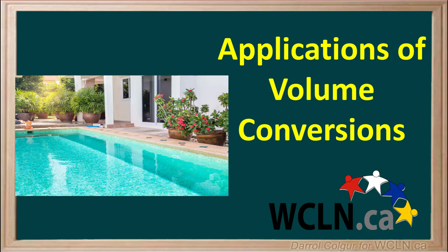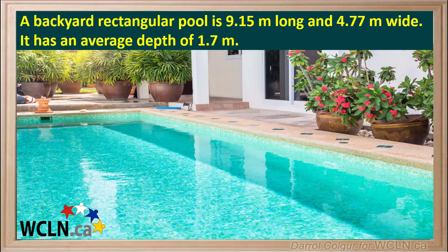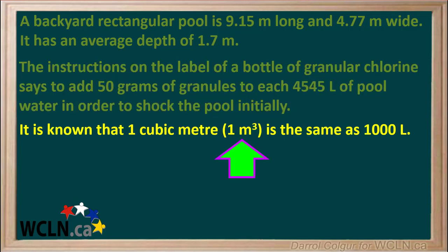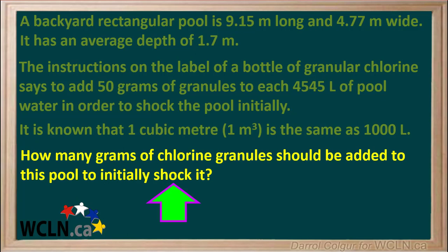Using a formula to calculate volume and making use of some conversion factors helps us solve many problems involving volumes. Here's one example. A backyard rectangular pool is 9.15 meters long and 4.77 meters wide, and the water has an average depth of 1.7 meters. The instructions on the label of a bottle of granular chlorine says to add 50 grams of granules to each 4,545 liters of pool water in order to shock the pool initially. It is known that a volume of 1 cubic meter is the same as 1,000 liters. The question asks how many grams of chlorine granules should be added to this pool to initially shock it?